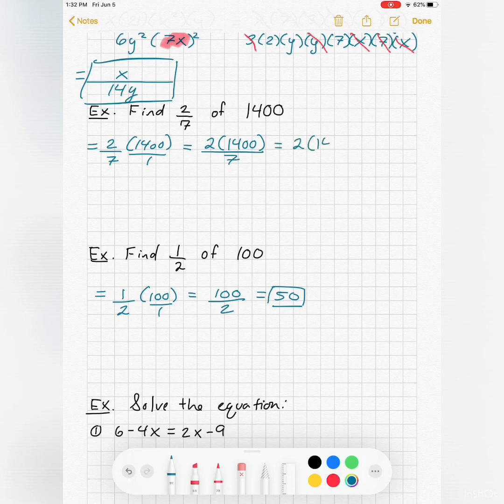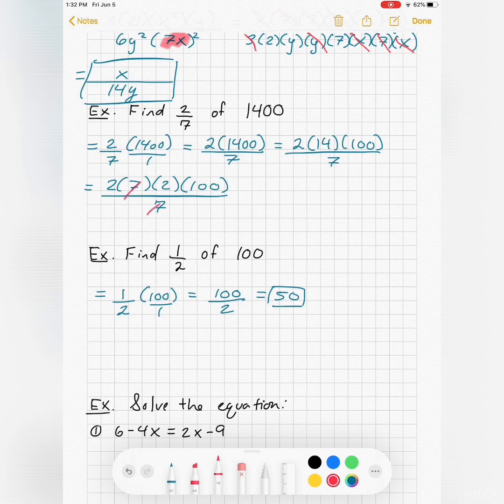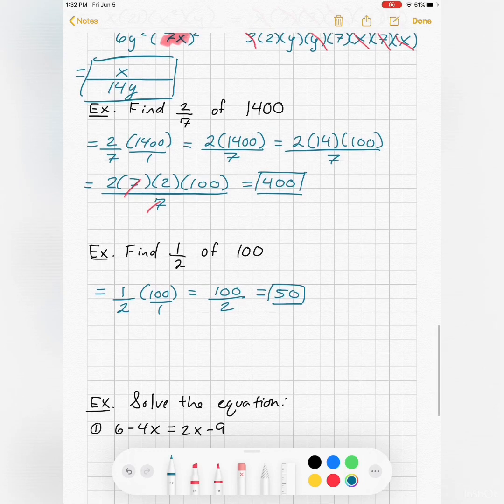Then you just have to reduce. So you start breaking down 1400. I notice it's 14 times a hundred, that way I can see my seven in there. So two sevenths of 1400 is 400.